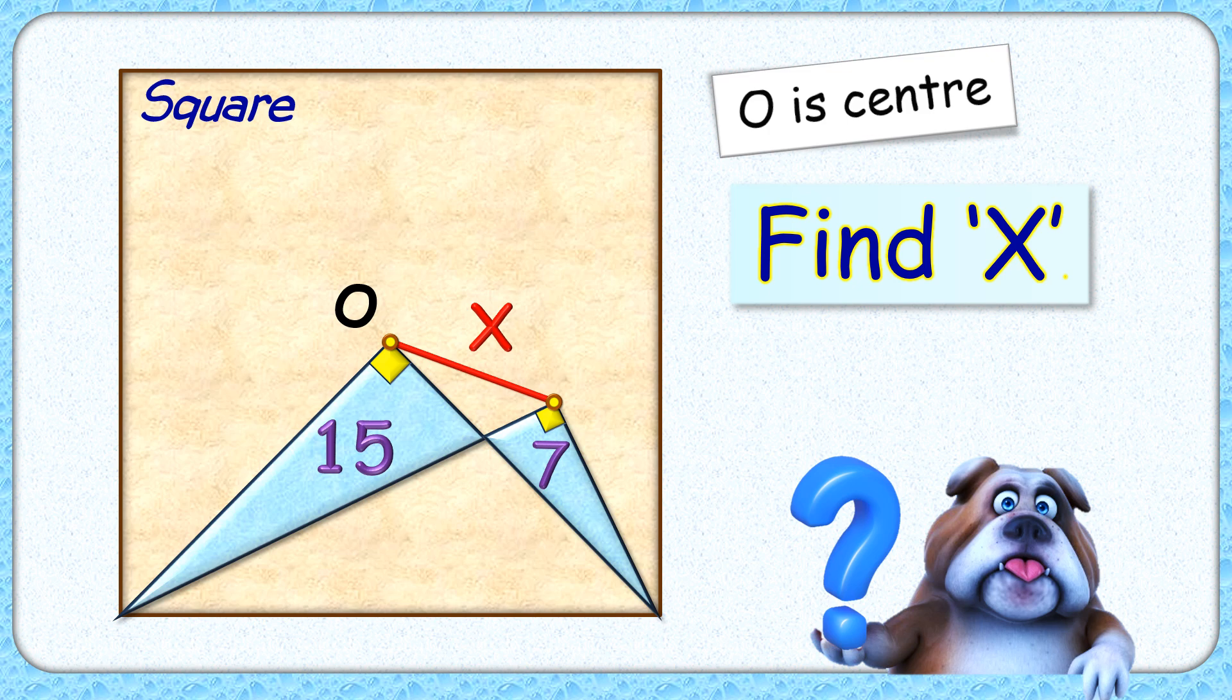Welcome everyone. This interesting question given to us is a square with center O. The area of these two right angle triangles is given as 15 and 7 centimeter square. The exciting part is, with this limited data, we have to find the length of this red line segment or value of x.